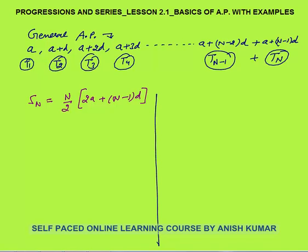Now I will tell you the second method to calculate the sum of first n terms of an AP. Sn can be written as n by 2 times a plus a plus n minus 1 into d. I have written 2a as a plus a. Now you know that this a is the first term t1, and a plus n minus 1 into d is the nth term tn.